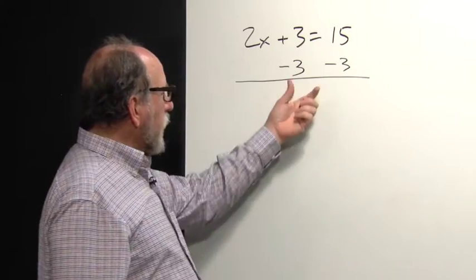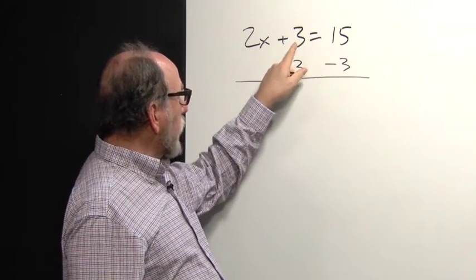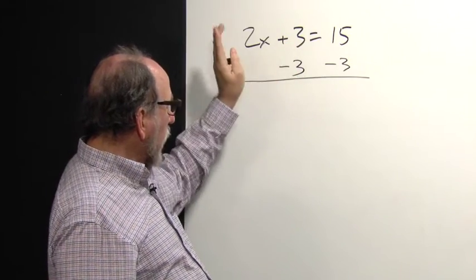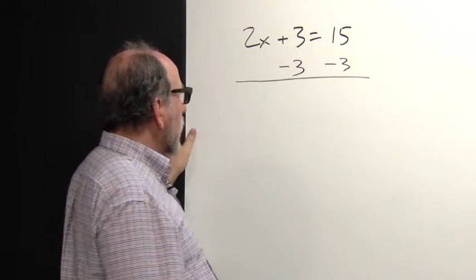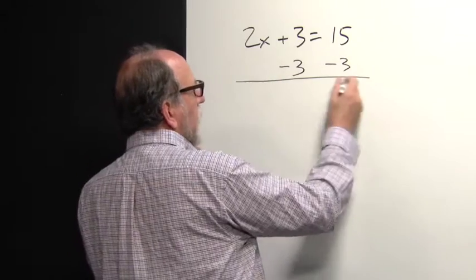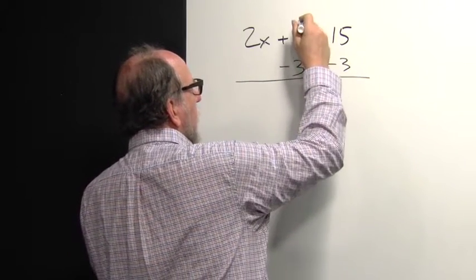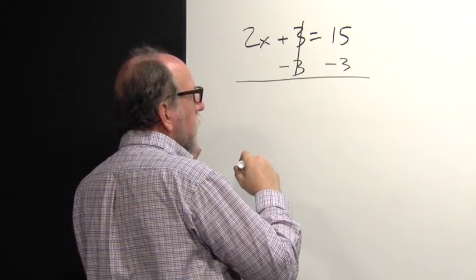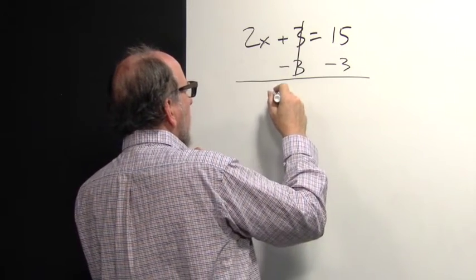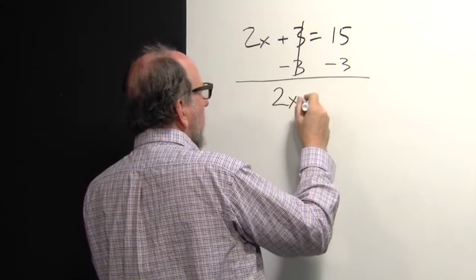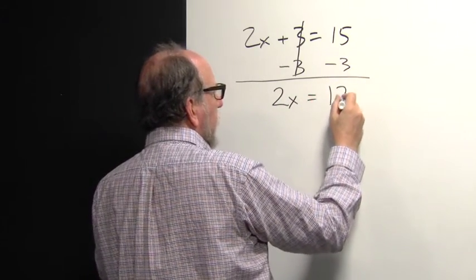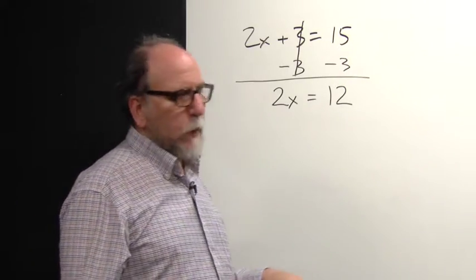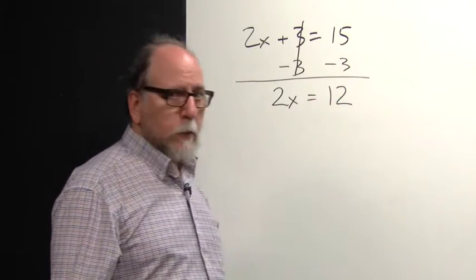When we subtract something from both sides or add something—and I'm subtracting 3 to get rid of 3 here so it adds to zero and we can eliminate it on the left—I write it underneath with a line under the whole calculation. So we can say 3 minus 3 is zero and eliminate that. We get 2x on this side and 15 minus 3 is 12. This also looks like a subtraction problem that you've had all your life, so it's easier to calculate that.